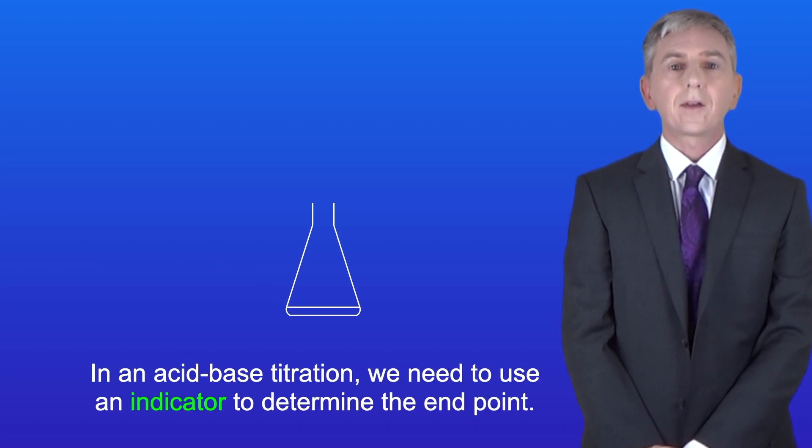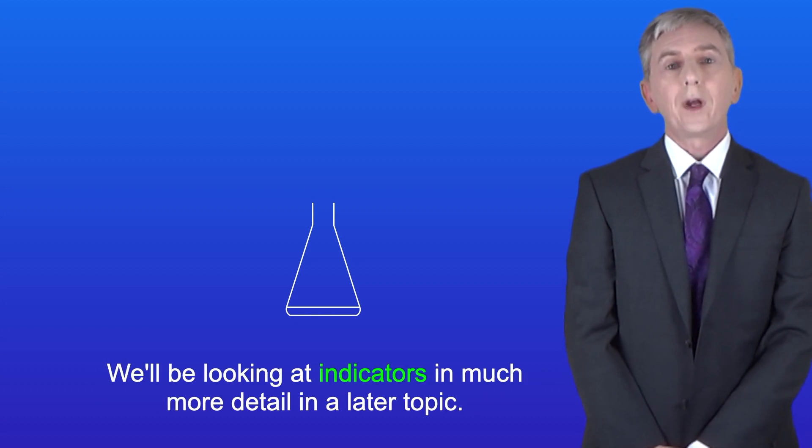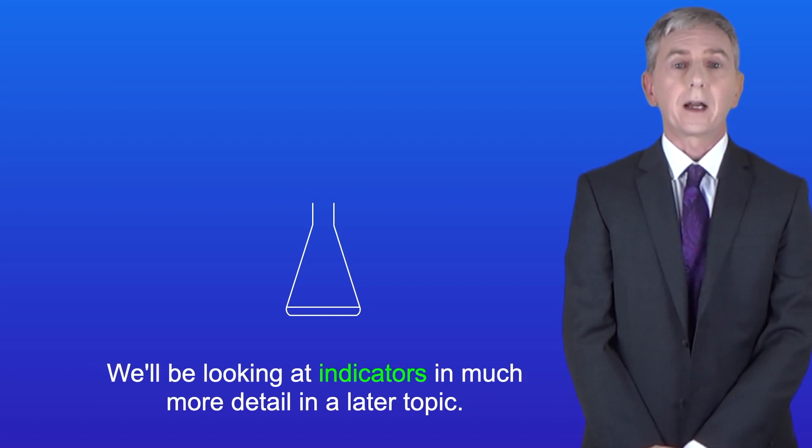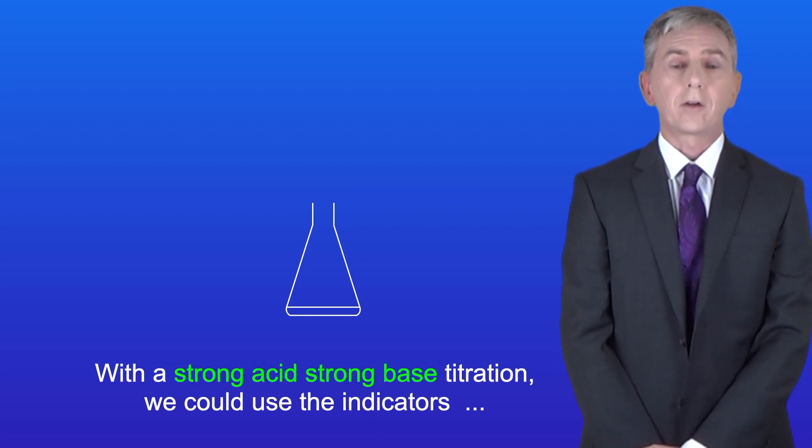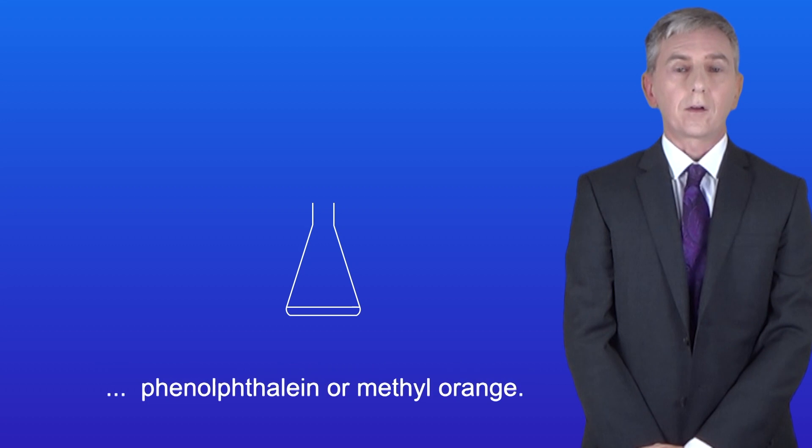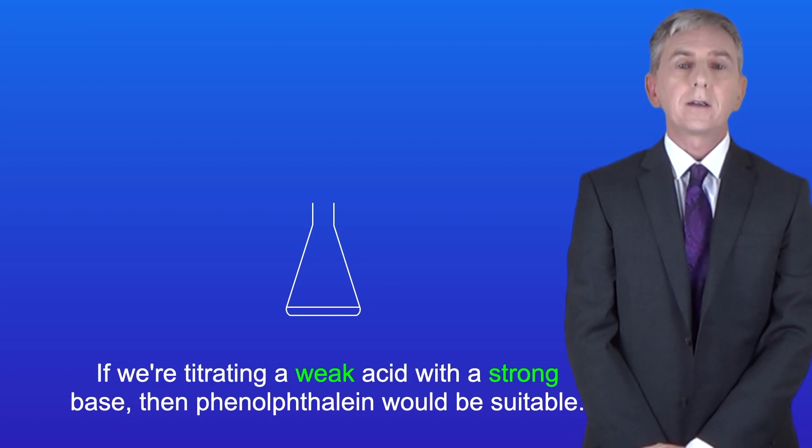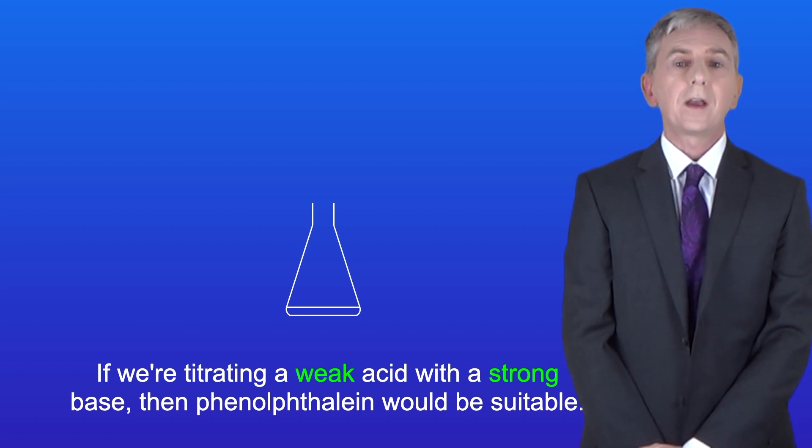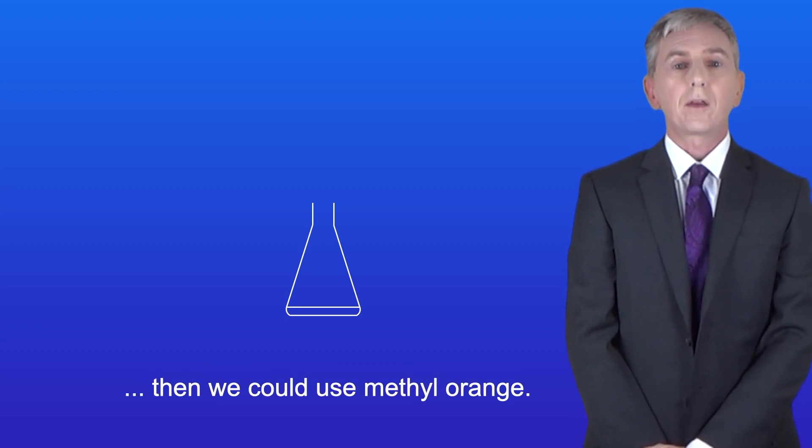Now in an acid-base titration we need to use an indicator to determine the end point. We'll be looking at indicators in much more detail in a later topic. With a strong acid strong base titration we could use the indicators phenolphthalein or methyl orange. If we're titrating a weak acid with a strong base then phenolphthalein would be suitable. And if we're titrating a strong acid with a weak base then we could use methyl orange.